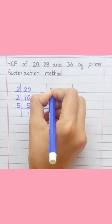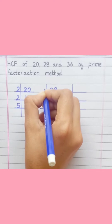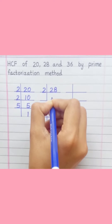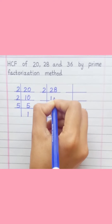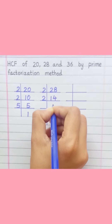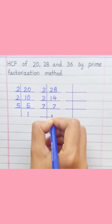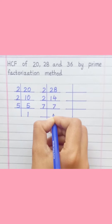28: 2 ones are 2, 2 fours are 8, 2 sevens are 14, 7 ones are 7. So the prime factorization of 28 is 2 × 2 × 7.